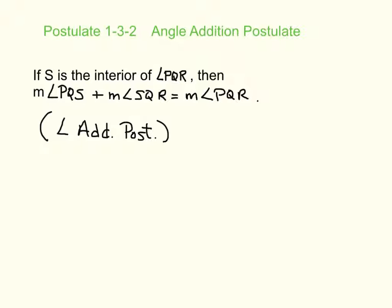The angle addition postulate is postulate number 1-3-2. Here's what it states. If S is the interior of angle PQR, then the measure of angle PQS plus the measure of angle SQR would give us the measure of angle PQR. And you're like, I have no clue what that even means. Here's what it's saying. S, if S, that means point. So we have an angle. This angle, it says is PQR. So we're going to name it PQR. It says S is in the interior. That's a point. So we have to have a point S. That means we have an angle here, a ray. And that cuts the angle into two other angles.